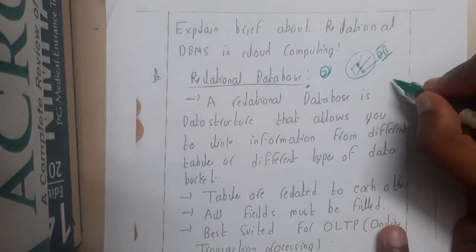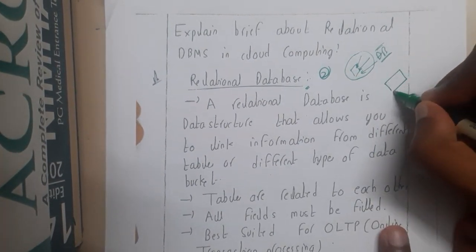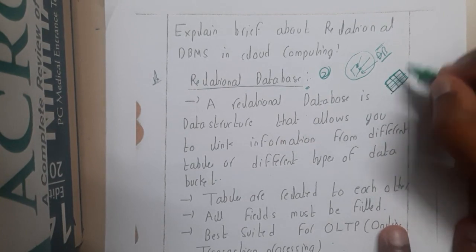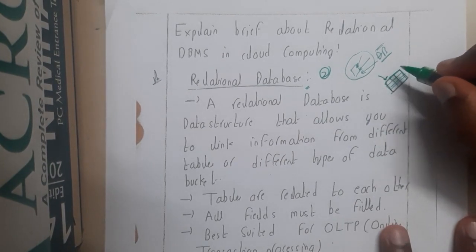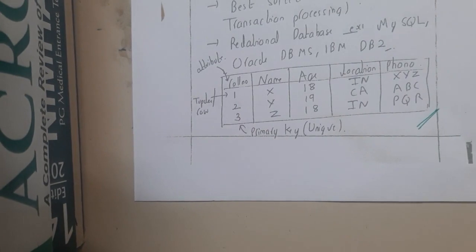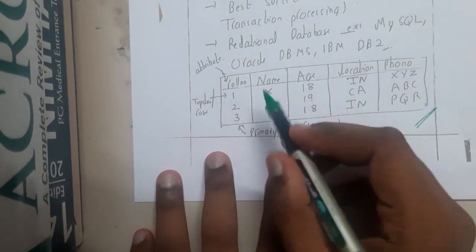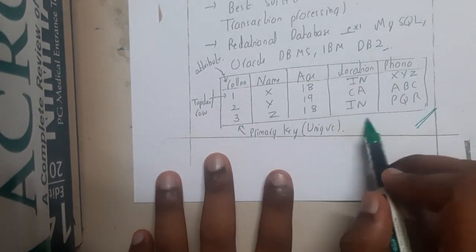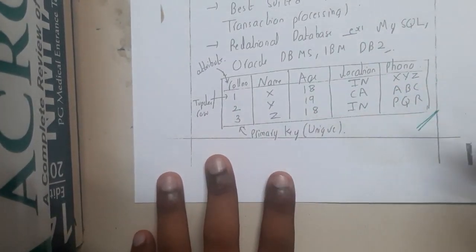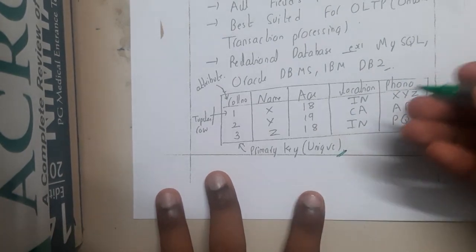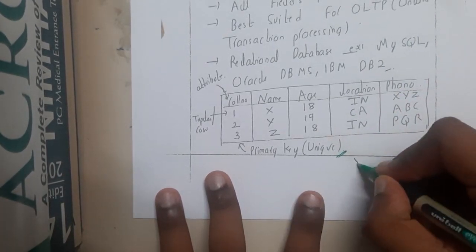Basically, what is a database or a table? The data is stored in terms of a table. It is divided into rows and columns, and it will have some attributes. Each row is called a tuple and each column is an attribute. We'll be having primary key, foreign key, super key and all those things.